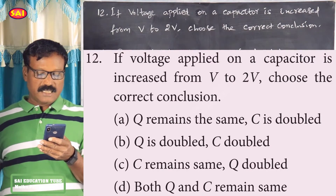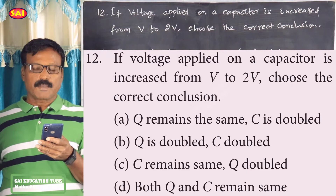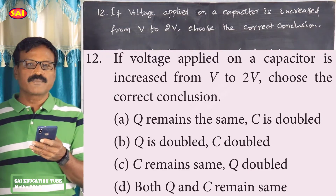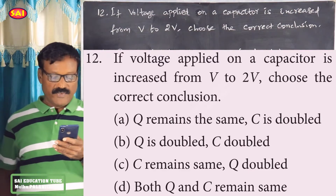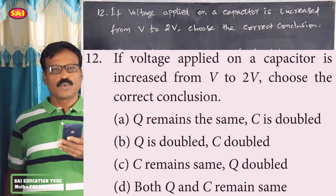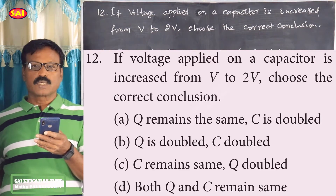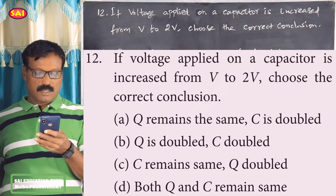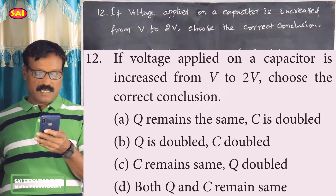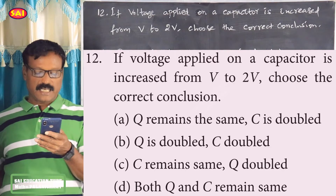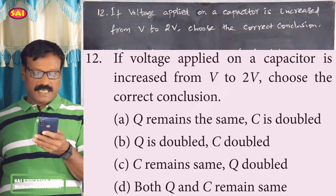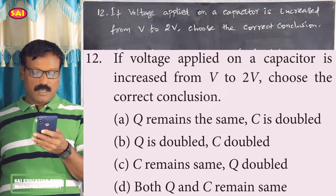If voltage applied on a capacitor is increased from V/2 to V, choose the correct conclusion. The options are: Q remains the same, C doubled; Q is doubled, C doubled; C remains the same, Q doubled; or both Q and C remain the same.